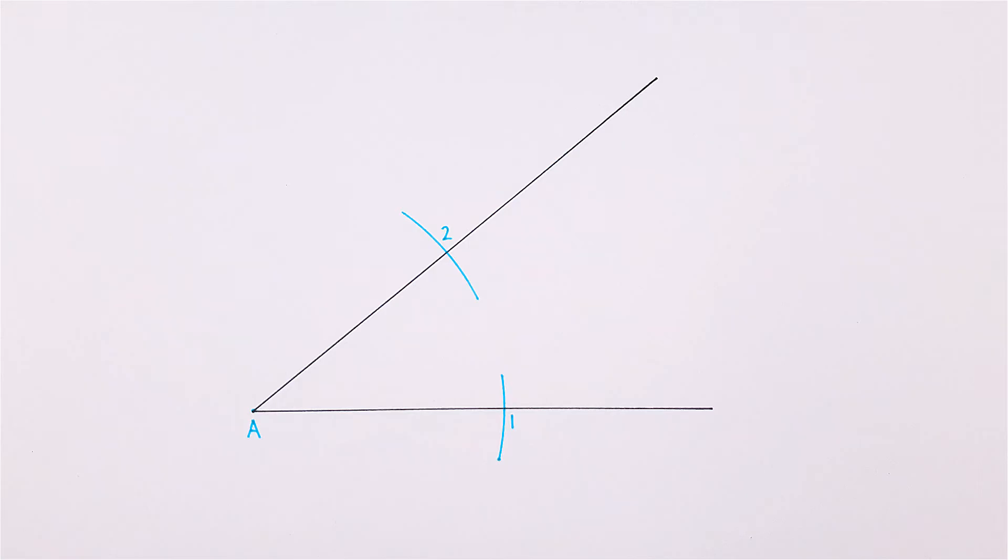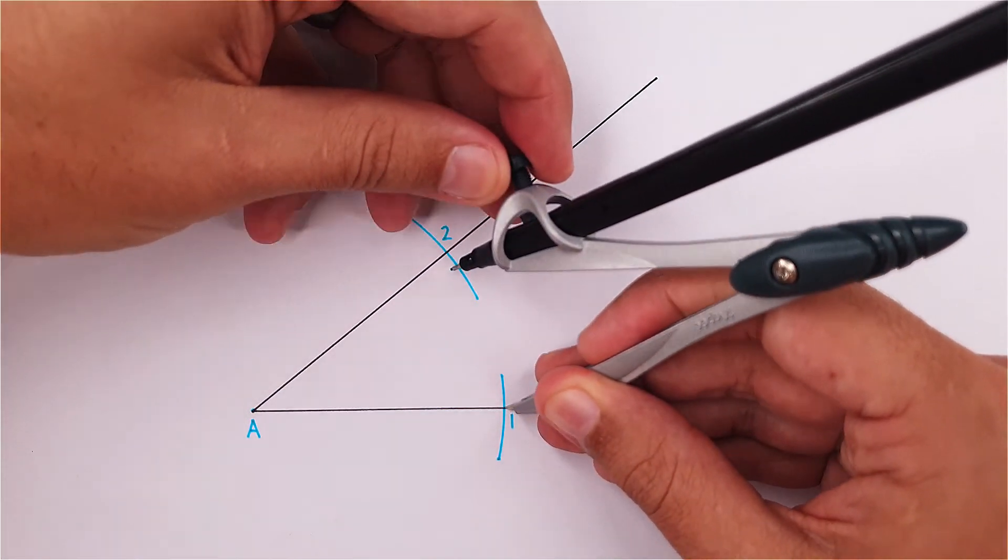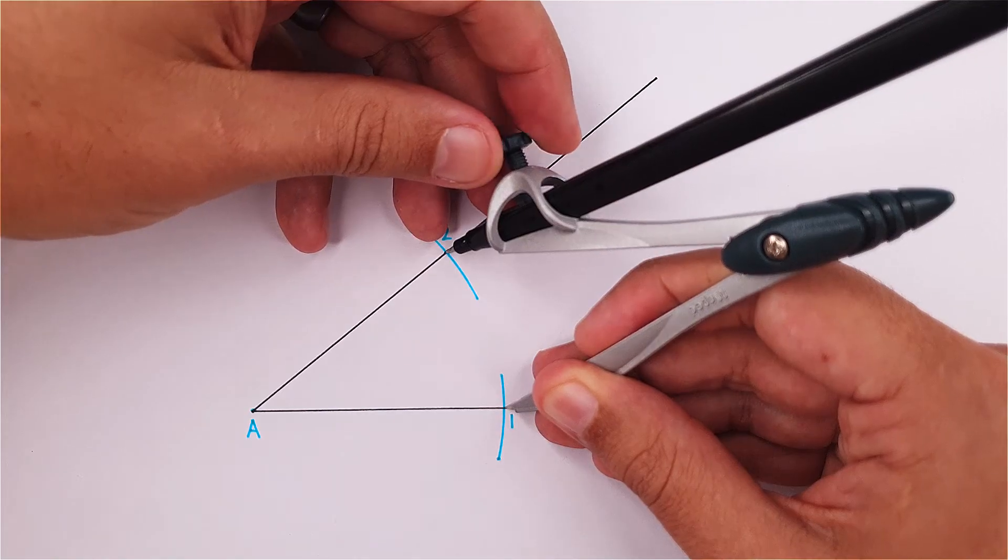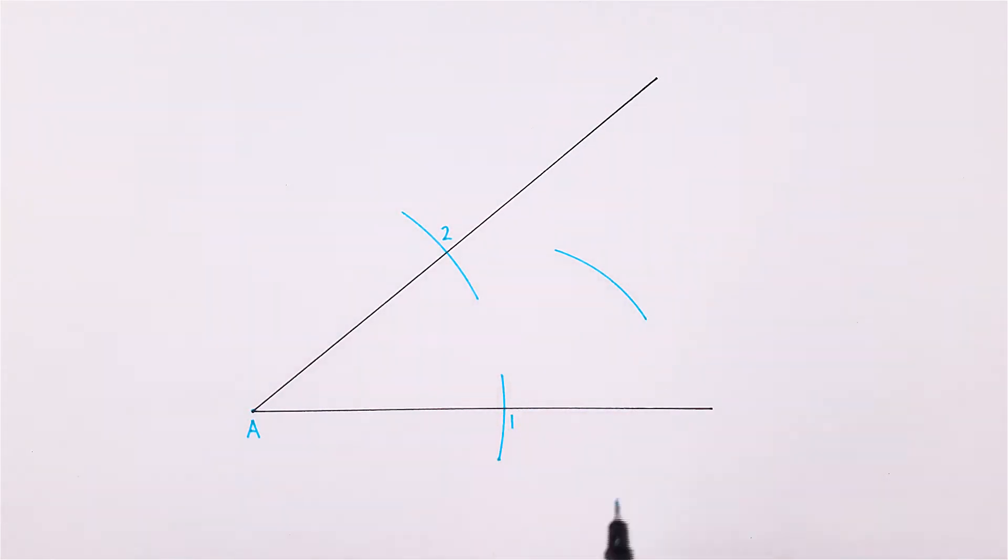Place your compass on point 1 and adjust it to more than half the distance to point 2. I prefer to use the measurement between the two points. Use this measurement to draw an arc between your two sides.